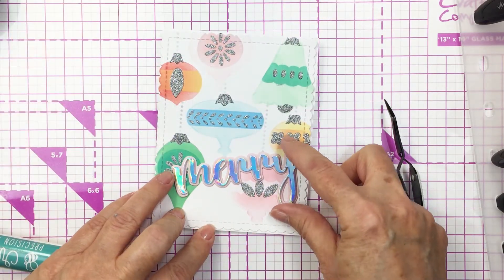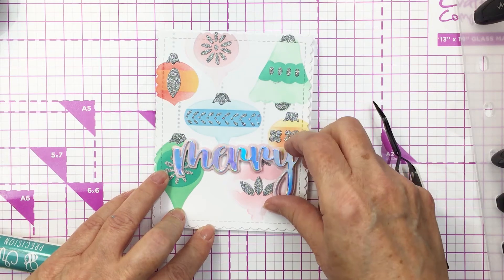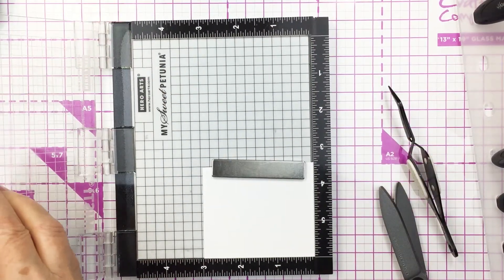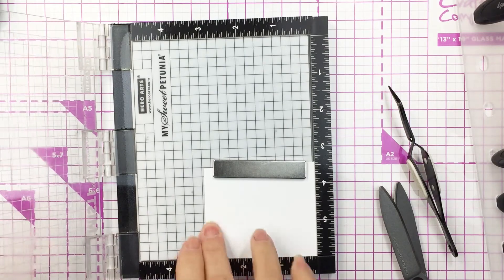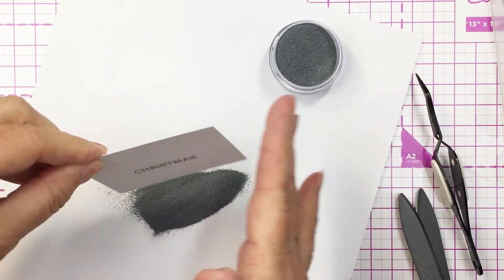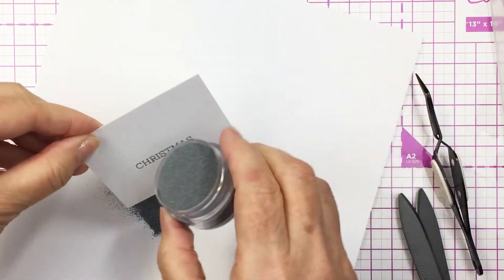I just thought I would put it in the lower half of the card. Here you can see that I'm going to do a little bit of stamping with the word Christmas, and this is from the merry stamp set, so my sentiment is going to be merry Christmas. I've stamped that with some embossing ink.